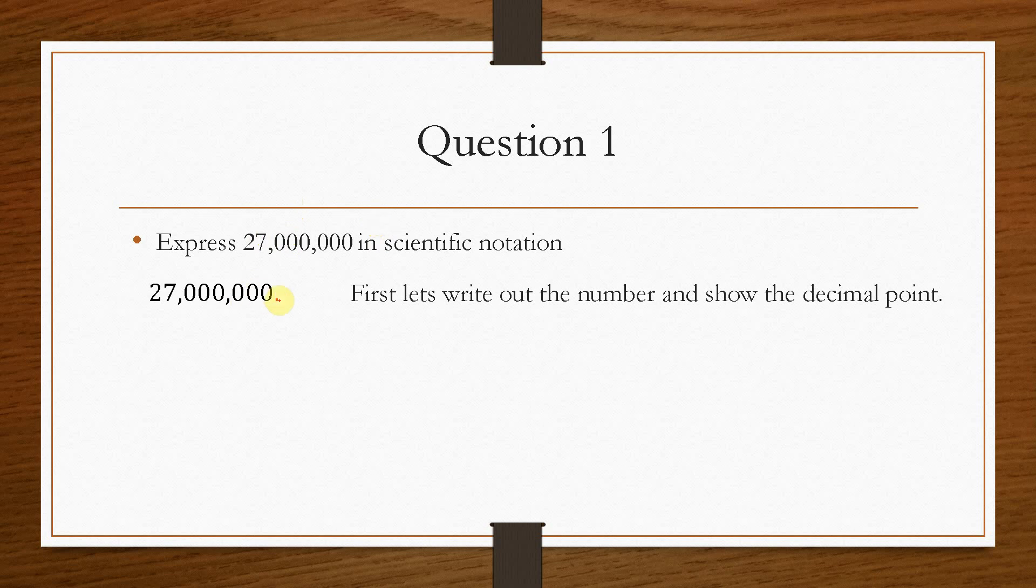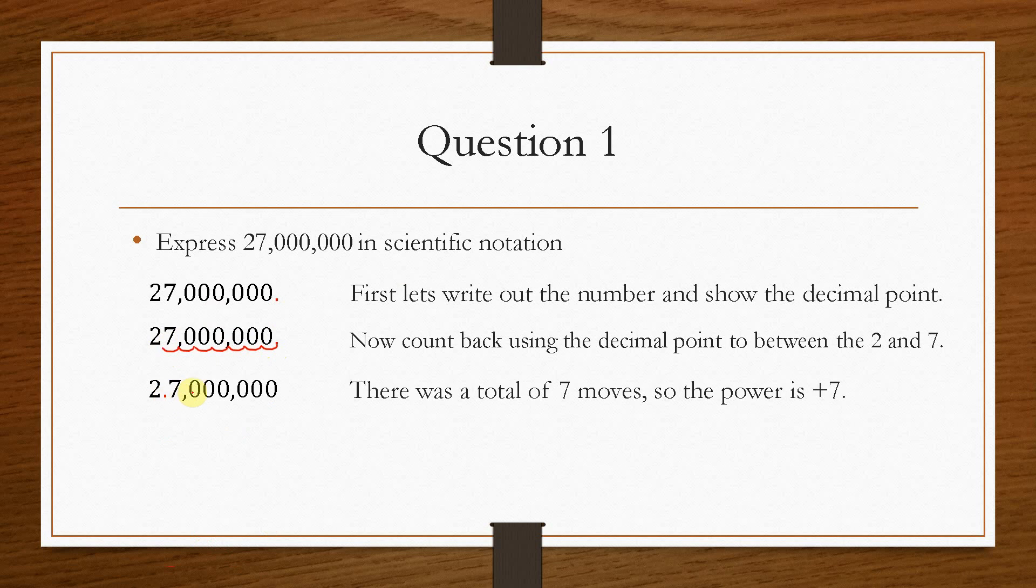So notice here we have the decimal point written here. Now what we're then going to do is we're going to count back using the decimal point, and we're going to go between the 2 and the 7. So we need to now count back all these times until this decimal point lies between the 2 and the 7. So if we do that, then what we end up with is this value. So we get 2.7, then 0, 0, 0, 0, 0, 0. Now we've moved here a total of 7 times, because let's just count this again. So we have 1 move, 2, 3, 4, 5, 6, and then 7.